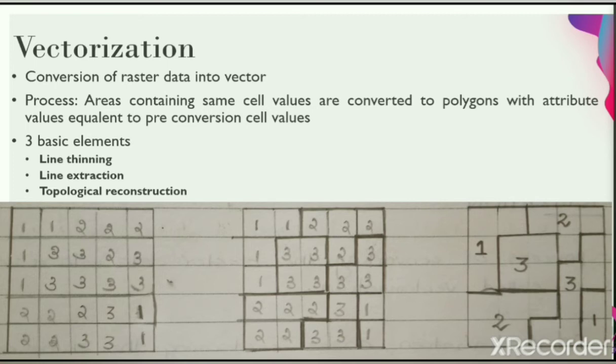First one is line thinning, followed by line extraction and topological reconstruction. Lines in the vector data model have length but no width. At the same time, raster lines in a scanned file will occupy several pixels with width in most cases. Hence, the raster lines must be thinned, ideally to one cell width, for vectorization.